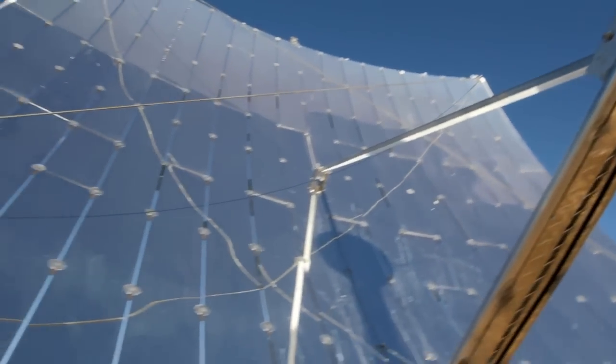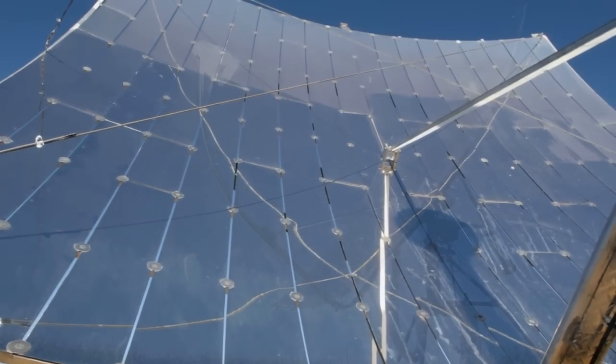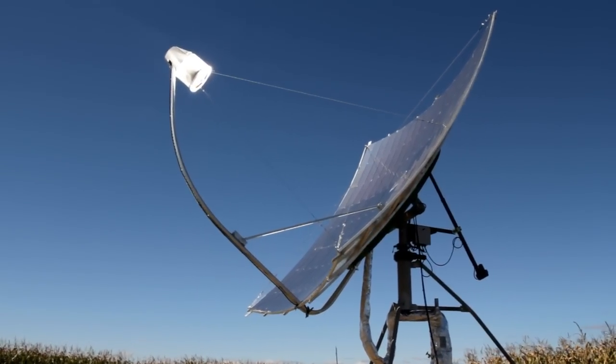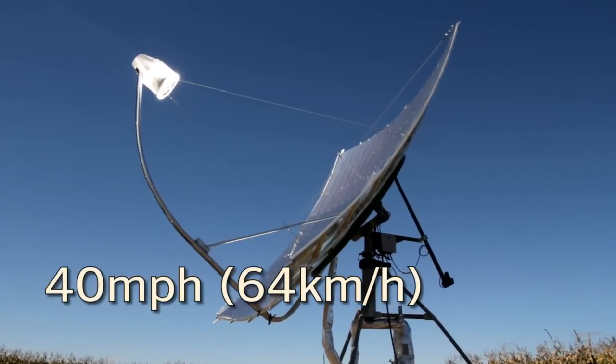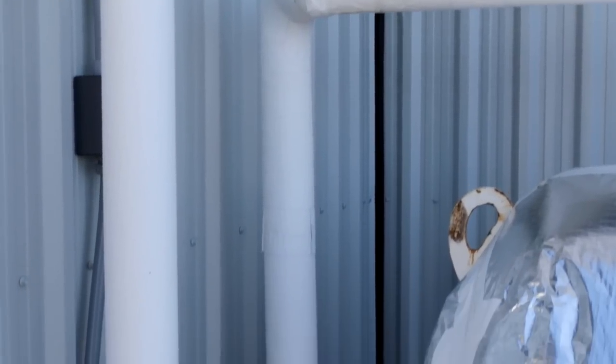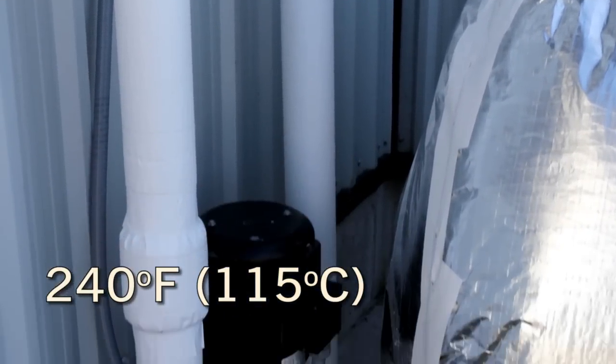There are two diversions in the system which cause the solar dish to shut down and move into a horizontal position: if the monitor registers 40 miles per hour wind, or if the liquid in the holding tank reaches 240 degrees Fahrenheit.